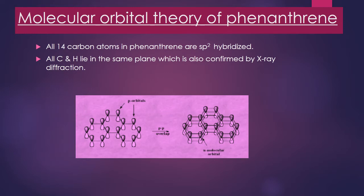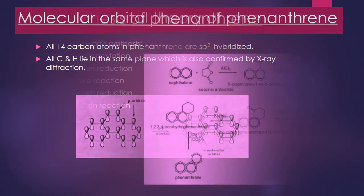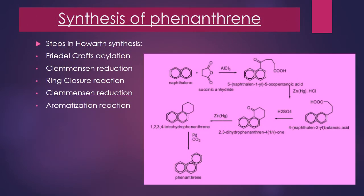Discussing the synthesis through the Haworth process, the synthesis involves the following steps: Friedel-Crafts acylation, Clemmensen reduction, ring closure reaction, Clemmensen reduction again, and finally an aromatization reaction.